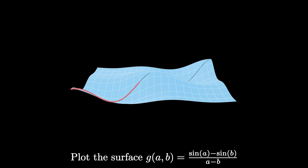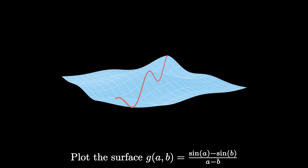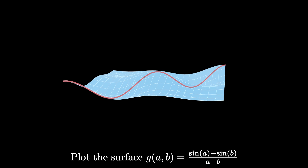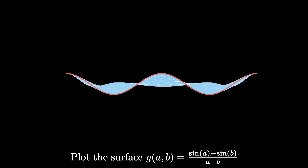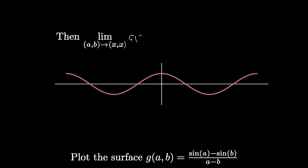It turns out that if we look at that set of discontinuities a little closer, it actually forms a curve. Just as we filled in the missing point to get the derivative at A, we can fill in the missing curve to see something amazing. This curve is actually the entire derivative of the sine function. If we look closely from the right angle and remove the surface, we see that the curve of discontinuity is actually the cosine curve. So if we consider a limiting process where we let the points A and B approach the point x comma x, we get cosine of x — the derivative of the sine function.